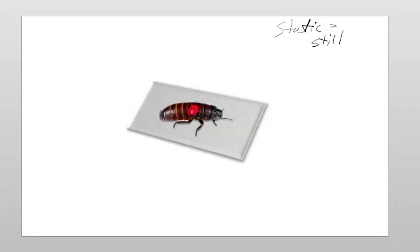Now you'll notice the roach is sitting on the table. So what I'm going to do to kind of simulate the table — and yeah, I know it's kind of at an angle, not very well drawn on my part — but I'm going to draw a dotted line to show that this dot, which symbolizes the roach, is in fact on a surface.